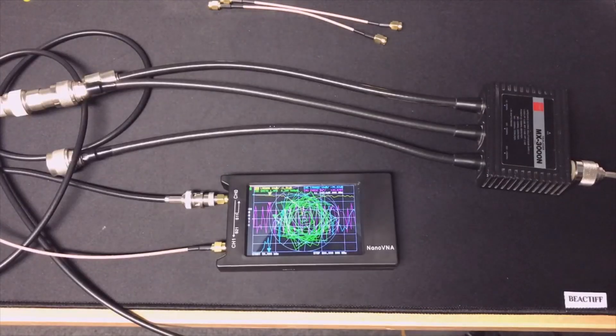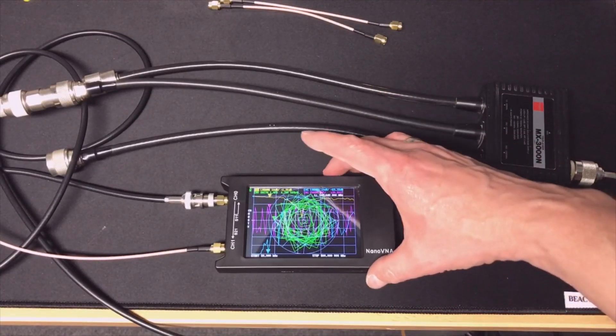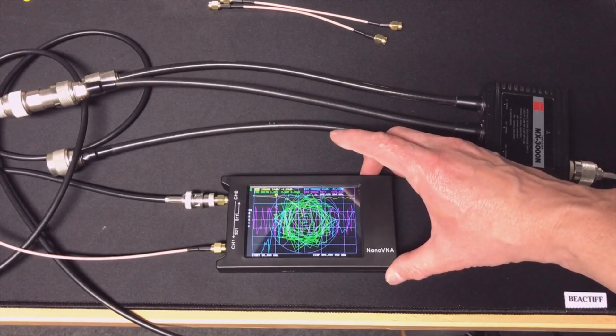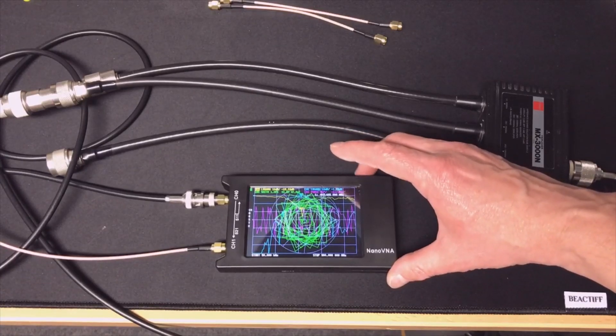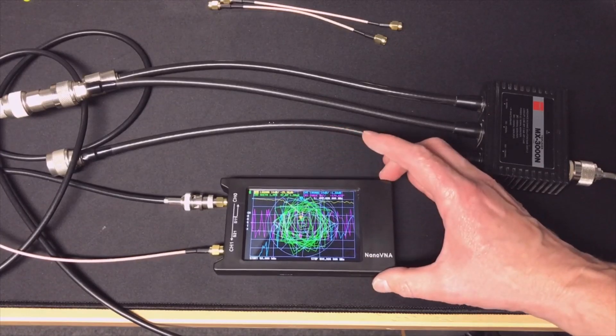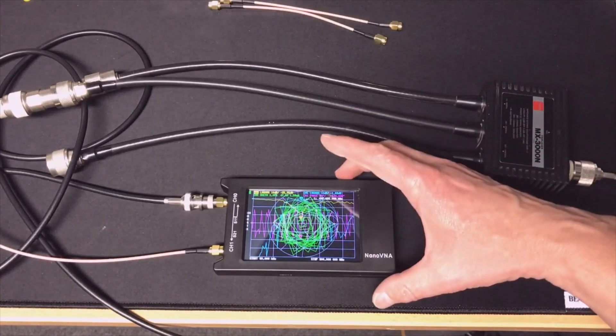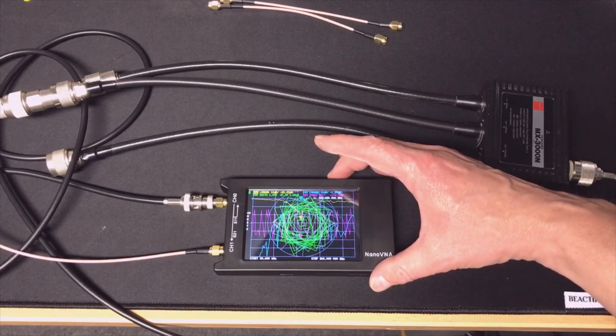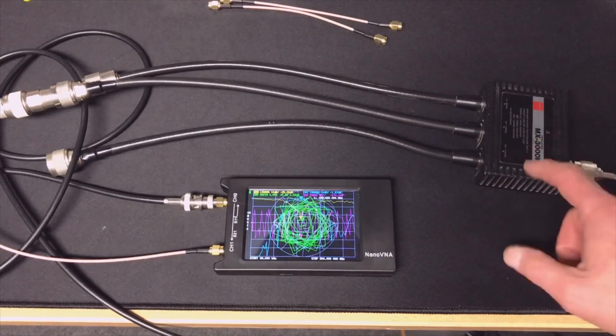Now it's to the second port, that should be the 70 centimeter band. If we are around somewhere near 430, that would be great. We start moving the marker and we are now in the sweet spot - it says 432 MHz. I think that's close enough, this is a pretty good filter.